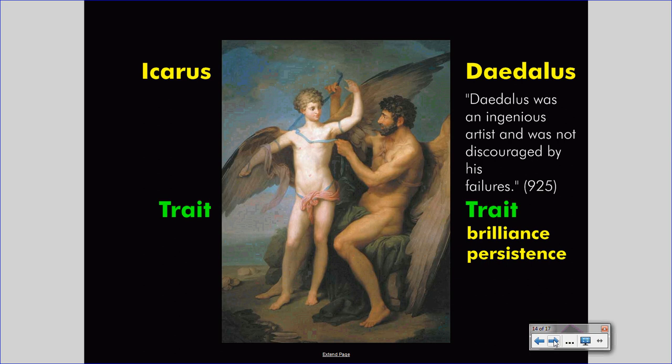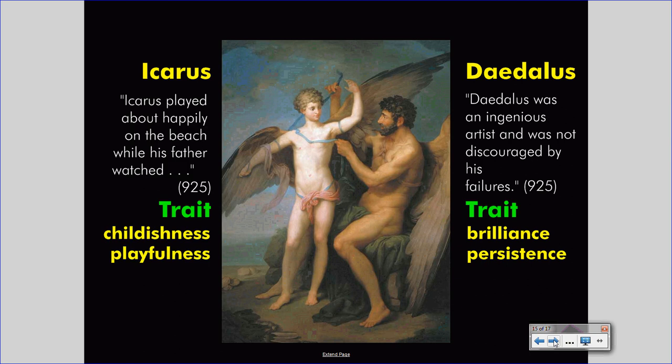Let's continue with Icarus. We might read about Icarus playing happily on the beach while his father watched. This would show us childishness or playfulness. Icarus is revealed by his behavior on the beach, and that revelation is indirect. We infer what Icarus is like from the information given to us in the text, but we don't directly know. Our guess is a pretty good one though, and further information from the Flight of Icarus will show us that we are correct.